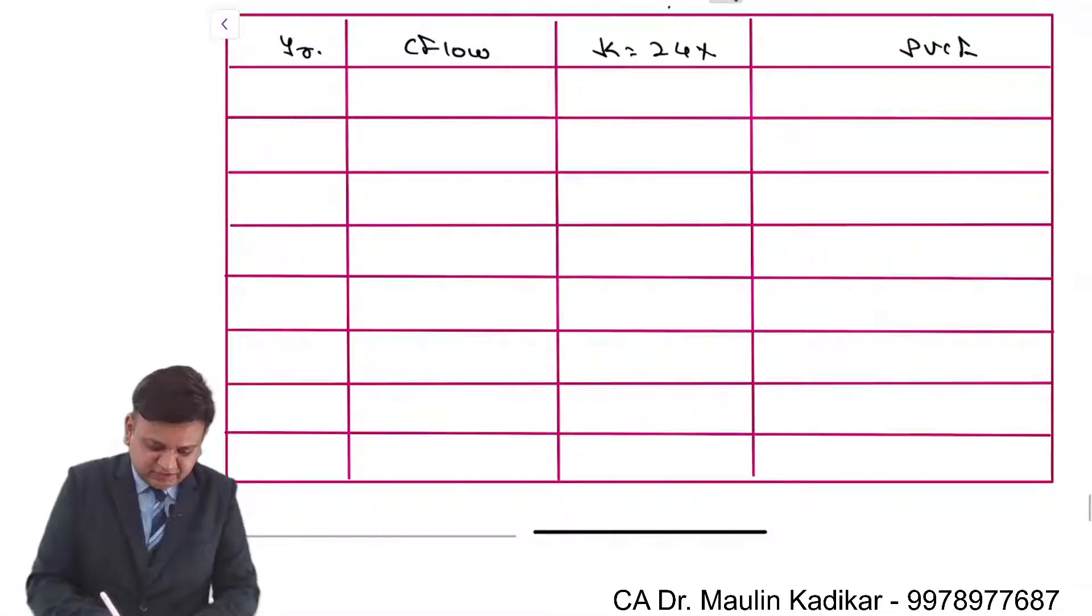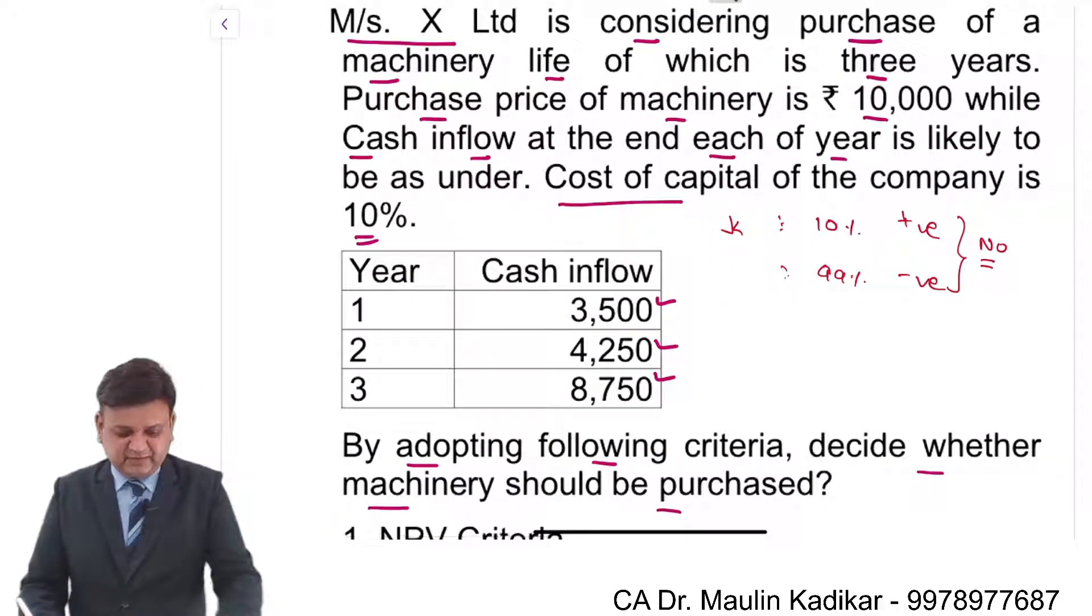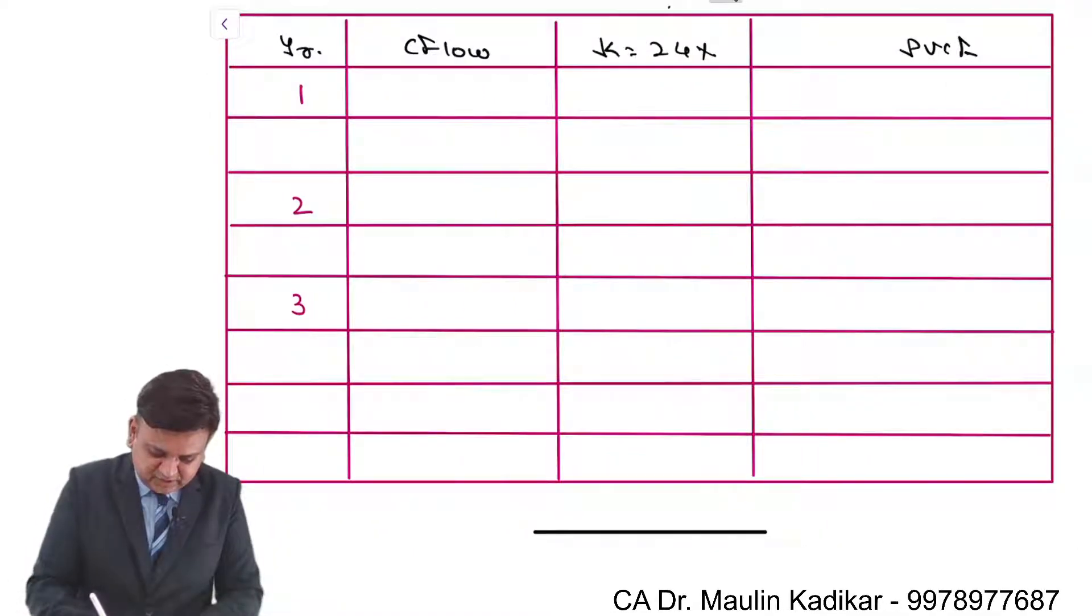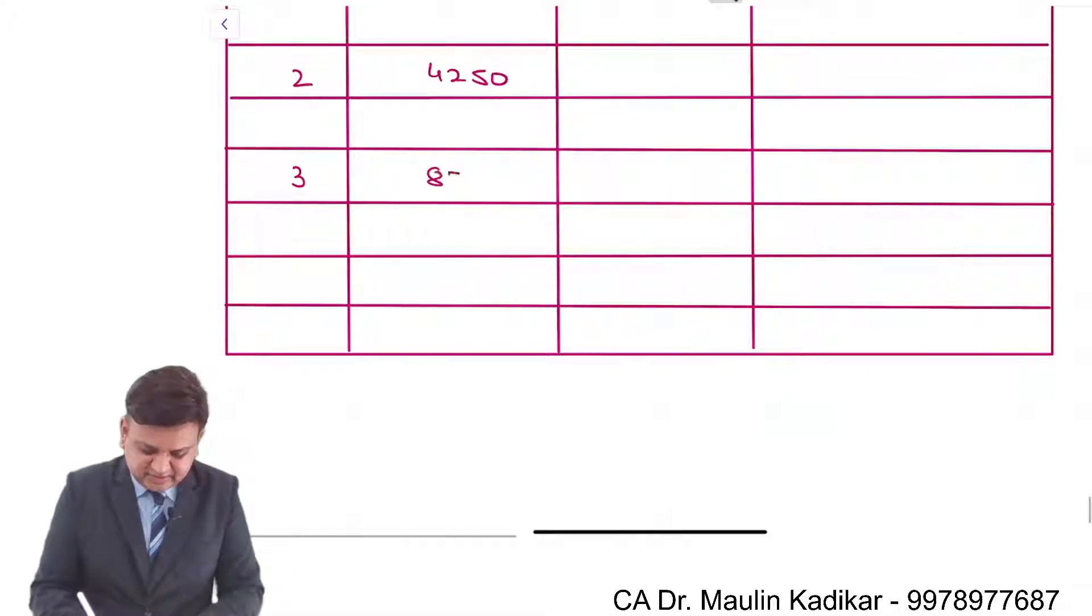So cash inflow for the first year, for second year, for third year. It is 3500, 4250, 8750.